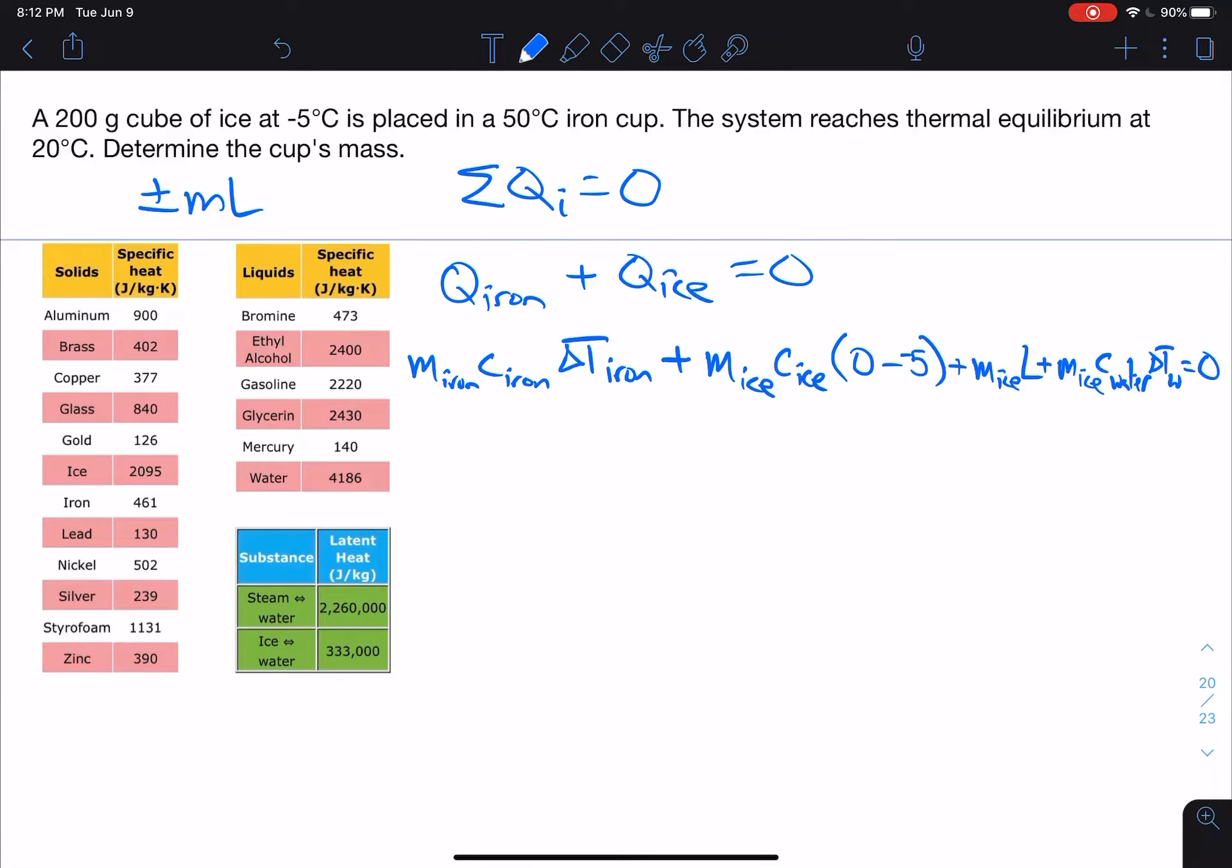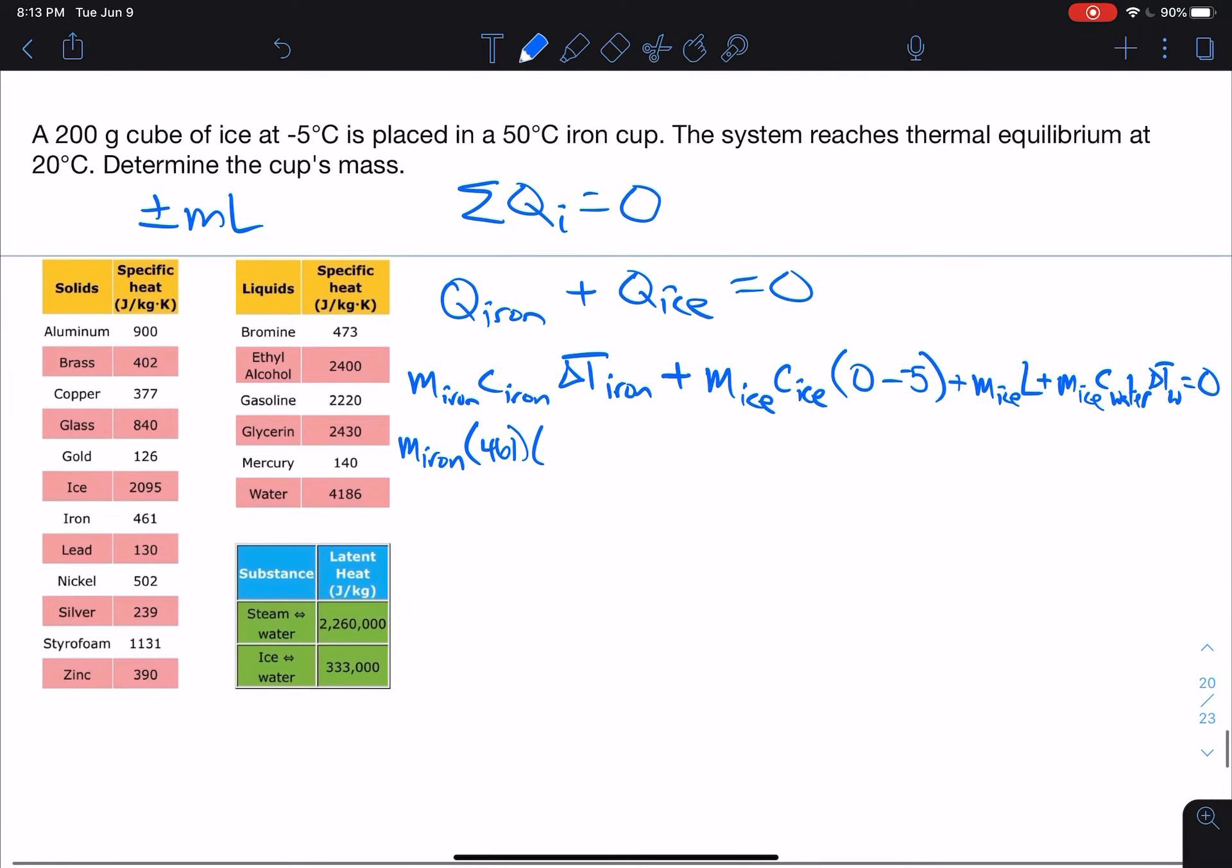Now, one thing about these calorimetry problems, sometimes the formulas get long. There's really no way around that. So now I'm going to start putting in all the values now that I've written this out. The mass of iron, we don't know that. We're looking for that. I know the specific heat of iron, I can look at my table. And if I do so, here's iron, 461. Change in temperature, it's going from 50 to 20. So that's going to be 20 minus 50.